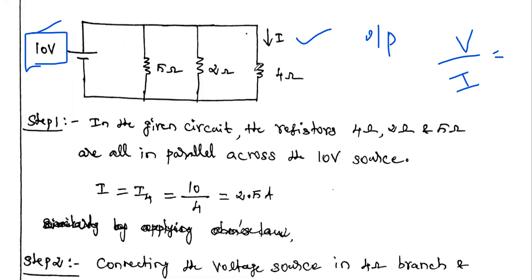In the second step, we have to interchange this voltage and current. So this input voltage source — you place it where we are measuring the current, that is where we are taking the response. In that place, you place this input source and measure the current here. At that time, we can get some current. Find the ratio V divided by I, and if this V divided by I is always equal to the first V divided by I, then the reciprocity theorem is verified.